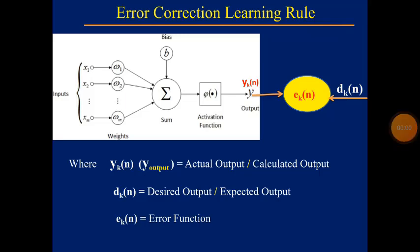In this session we will discuss the error correction learning rule. In the figure, x1, x2, and so on to xm are the set of input units, and w1, w2, and so on to wm are the corresponding synaptic weights. We will calculate the summation.